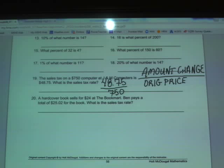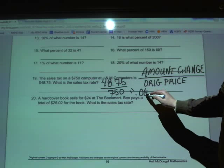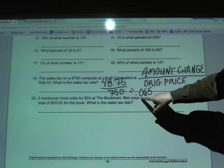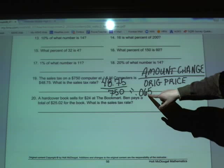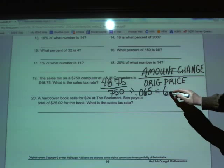Well, when I go ahead and divide that out, the result is 0.065. Well, that's the answer, but it's written as a decimal. Sales tax is always a percentage. So we're going to go ahead and move that decimal twice to the right, because that's how we translate to percent. I'm going to tack on a percent sign, and that's going to be my answer, 6.5%.